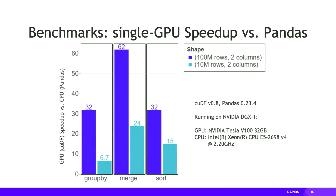Here are some micro-benchmarks for cuDF — single-GPU speedup compared to pandas, all bars showing GPU versus CPU performance. The blue bars represent a larger data frame: two columns of 100 million rows versus two columns of 10 million rows in 64-bit floats. You can see speedups from 30 to 60x on large data frames for group-by, merge (like a join), and sort operations.